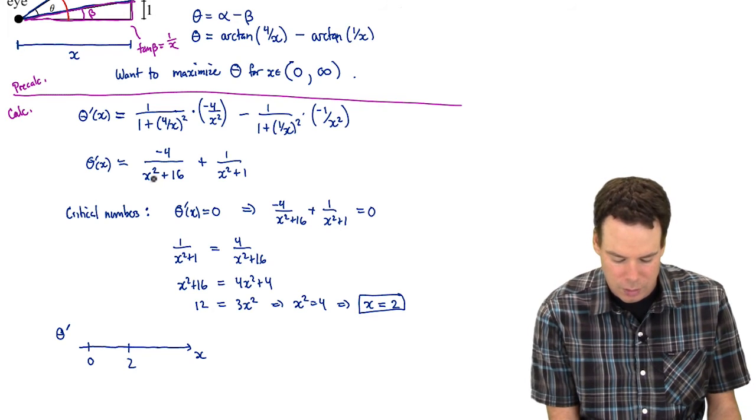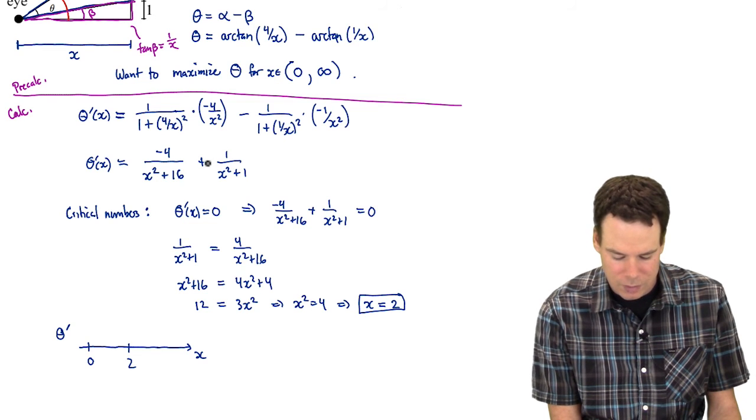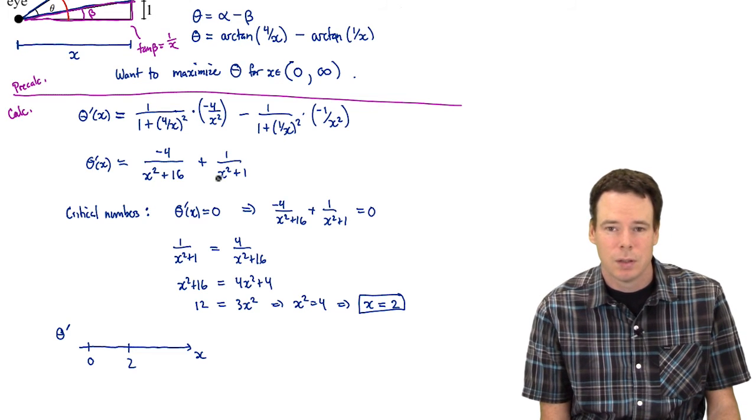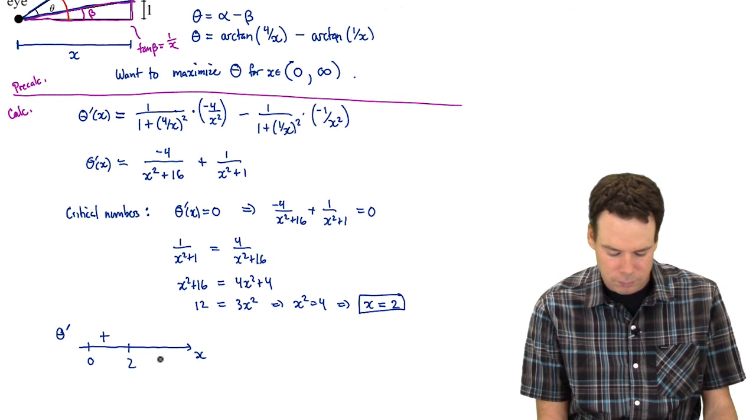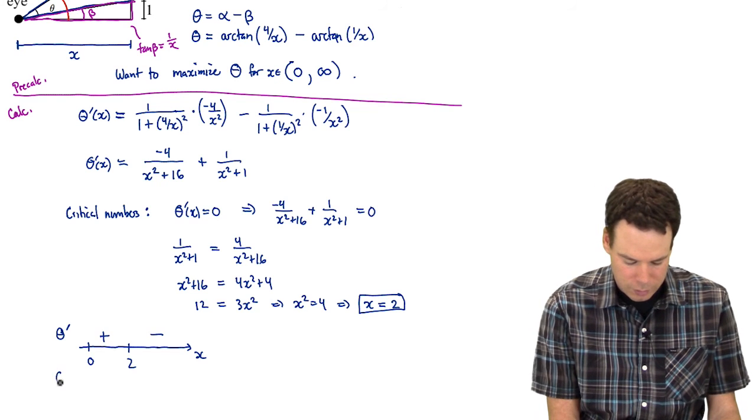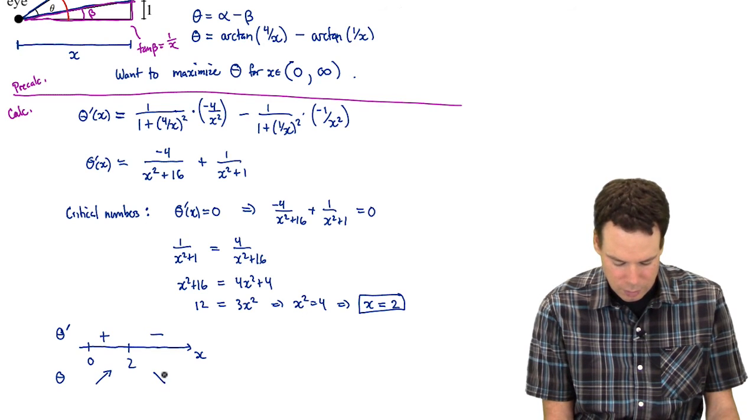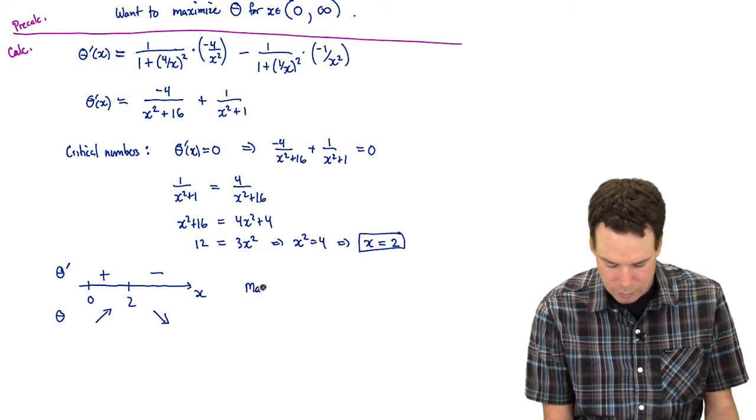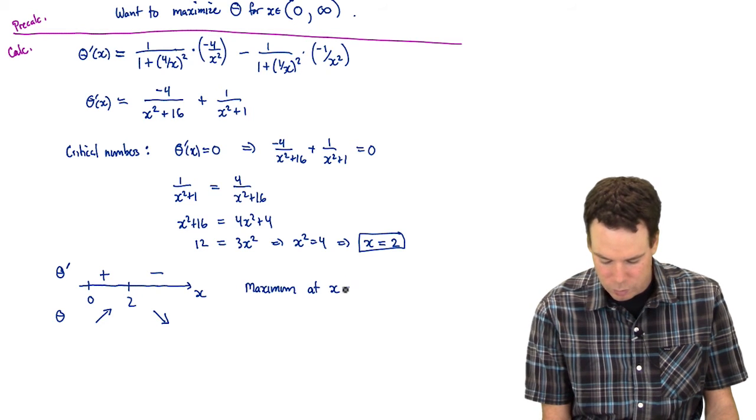I know the critical number so I know the sign has to be the same in each of these intervals. So I'm going to pick a test point in the 0 to 2 interval, let's say 1, plug it into the function. That becomes a negative 4 over 17 and the other part is 1 over 2. So 1 half is bigger than negative 4 over 17, so this will be positive. So then I can pick another test point over here, say 3, plug it in and we'll see we get a negative value. So what that means for our function theta is that it's increasing and then it's decreasing. So that means that we have a maximum at x equals 2.